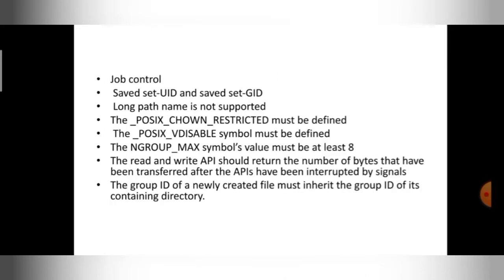Next, POSIX_CHOWN_RESTRICTED must be defined. CHOWN restricted allows you to change the ownership of a file. If the value is minus 1 for CHOWN restricted, you can change the ownership of the file. This feature should be present if you are using a FIPS standard — you can change the ownership of the file without any problem.